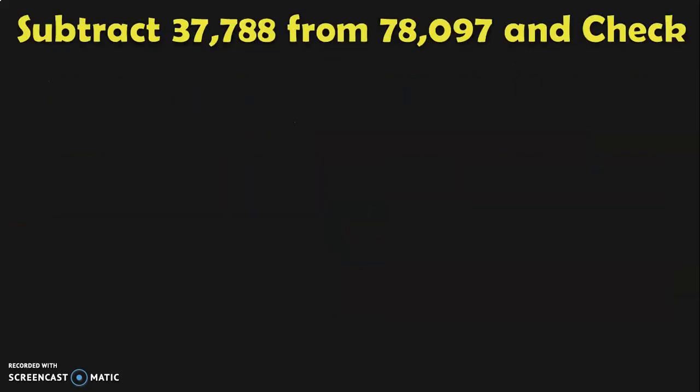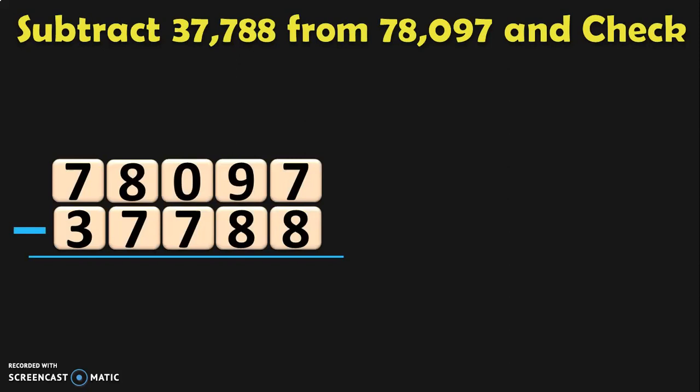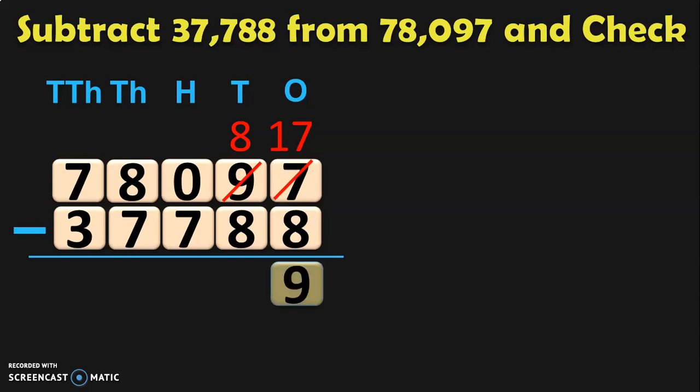Let us do another sum to understand the concept better. Subtract 37,788 from 78,097 and check. First write down the numbers one below the other and write down their place values. Begin the subtraction from the ones place. In ones place we have 7 minus 8; since 8 is greater than 7, you cannot directly perform the subtraction. Move on to the tens place to borrow. The 9 tens become 8 tens and 10 ones given to the ones place, making it 17 ones. 17 minus 8 gives you 9 ones.